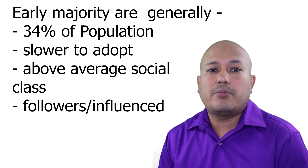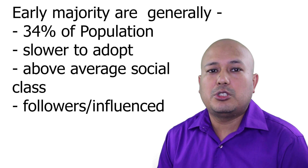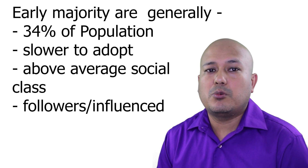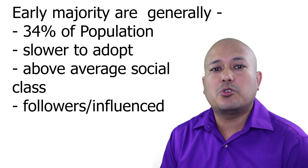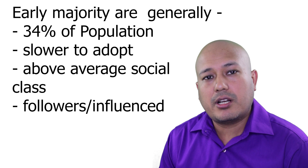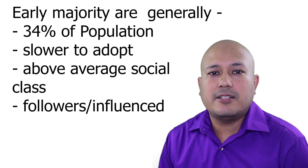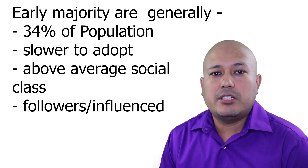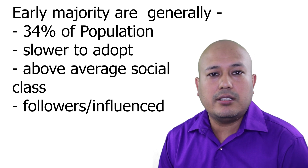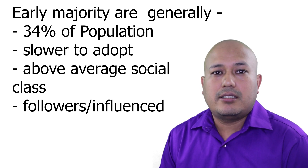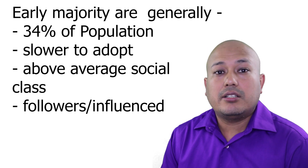Once early adopters have adopted the product, around 20% of the population — one in five people — has tried it. The next group is the early majority. These people know for sure that the product works because they have seen others using it, particularly those they look up to as being at the forefront of new product adoption. Unlike innovators who act independently, the early majority are followers who are influenced by other people and by influential users of the product.